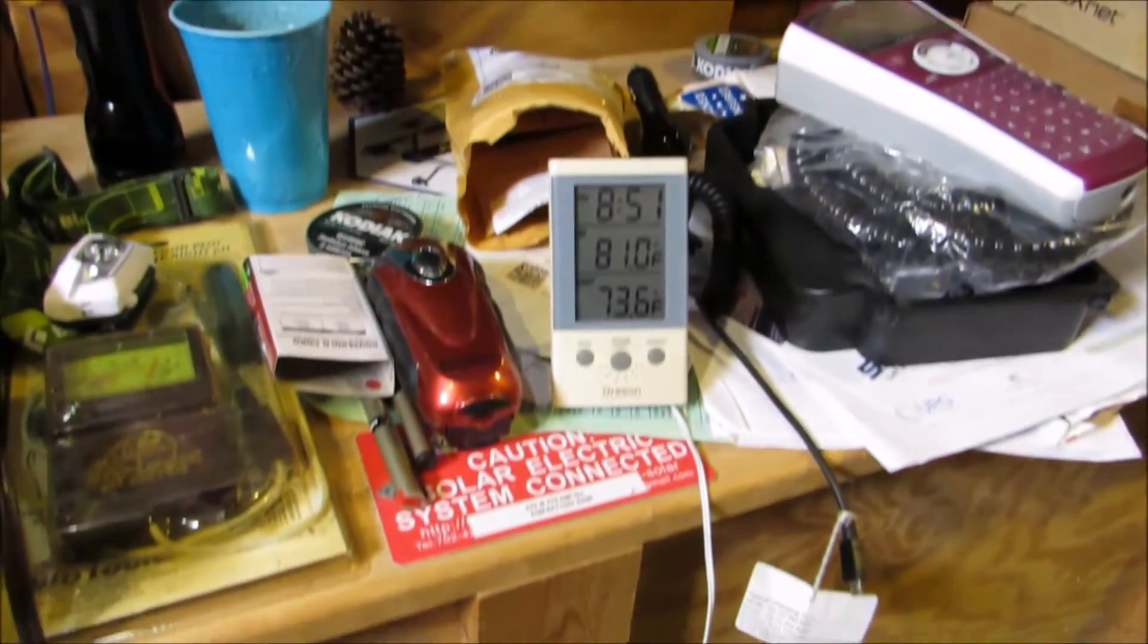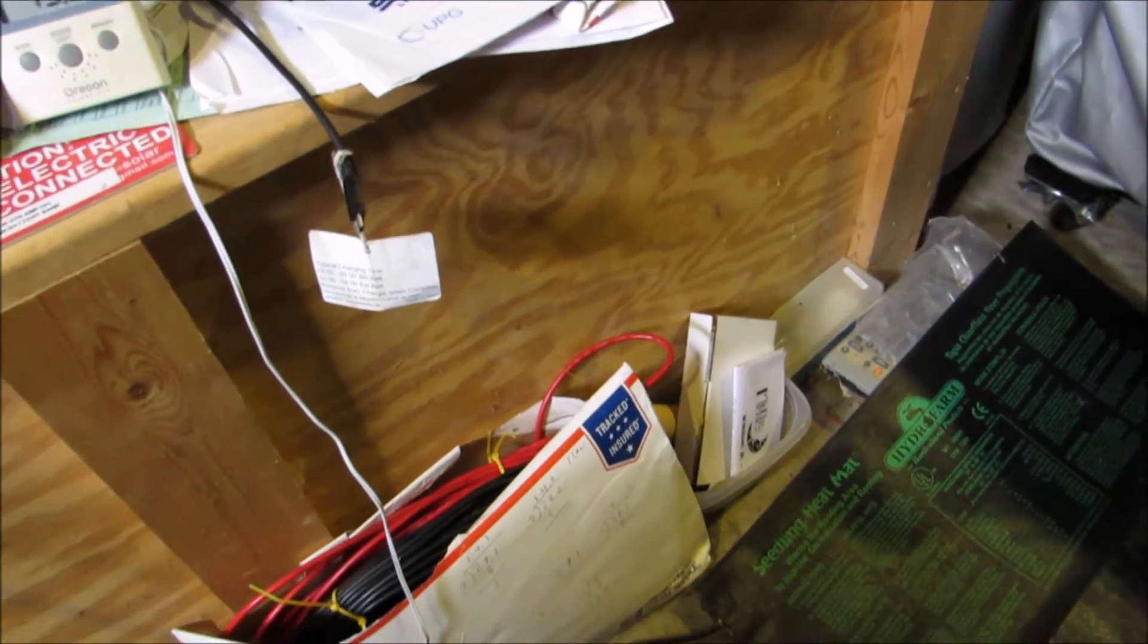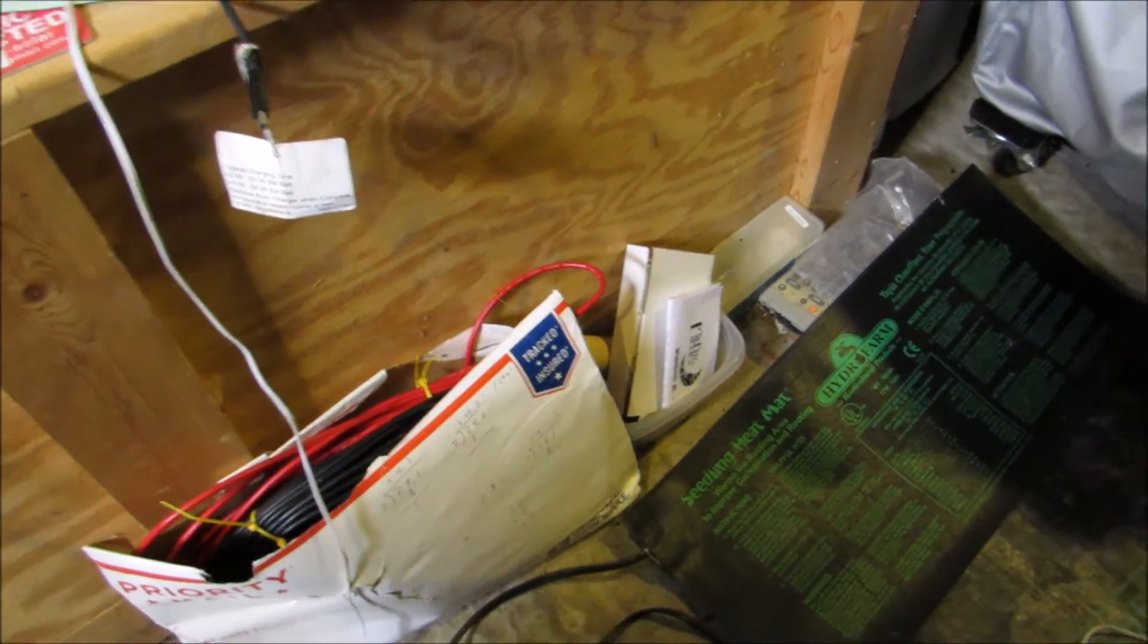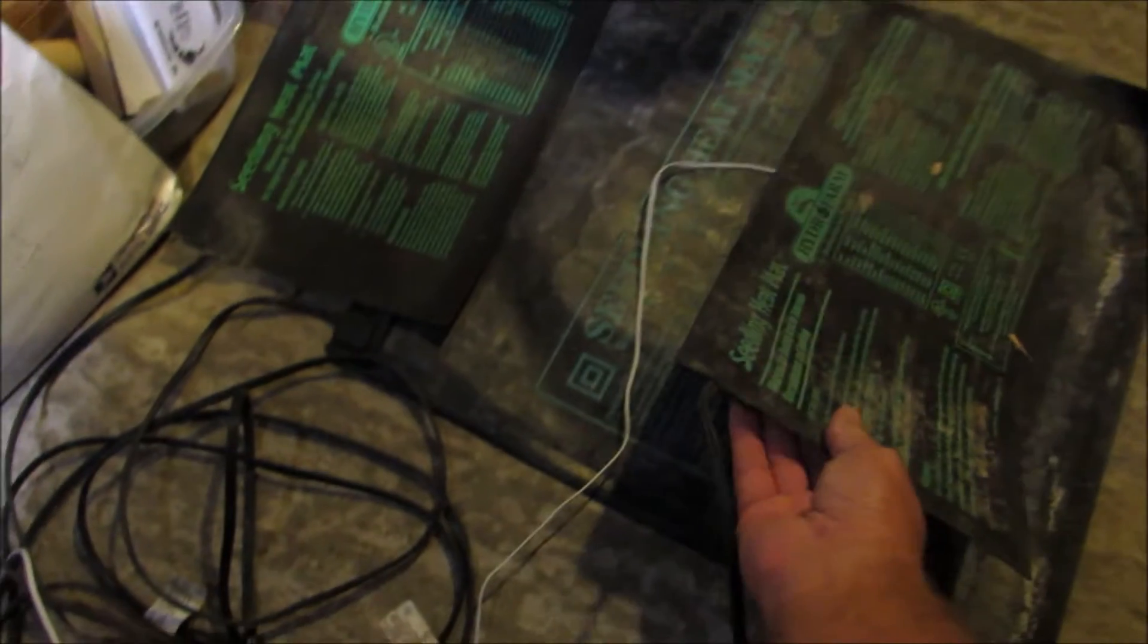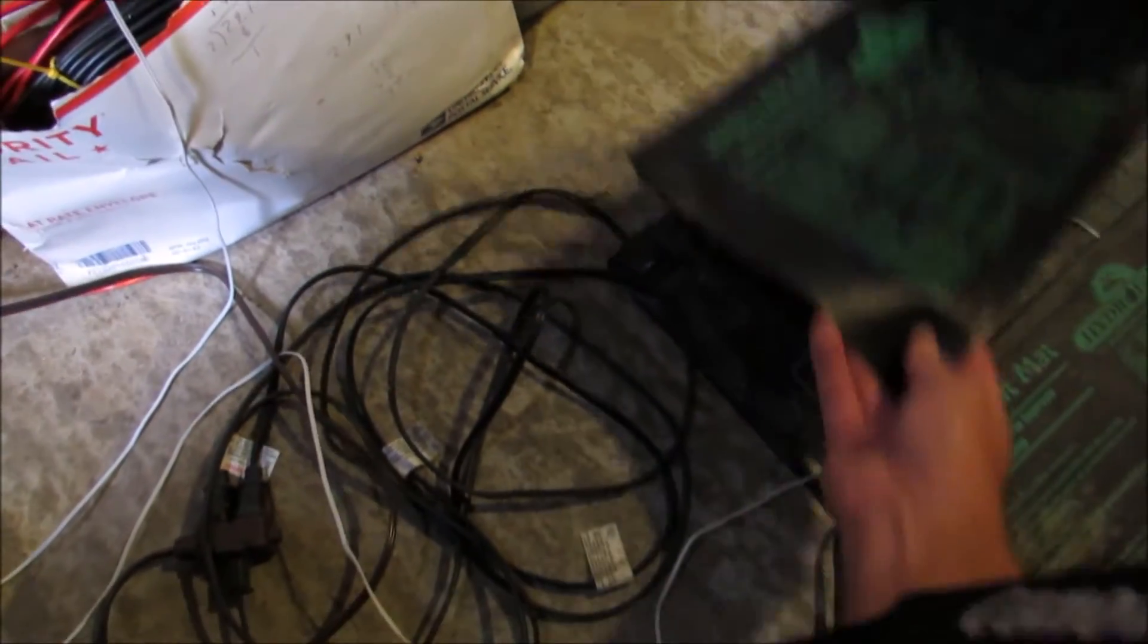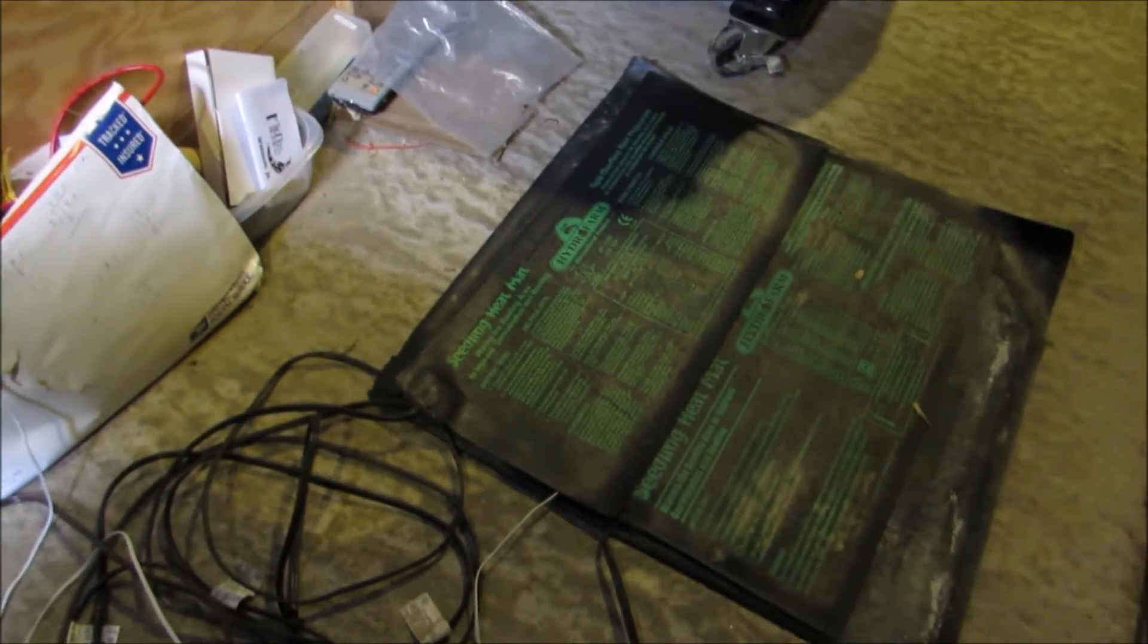We're at 73.6 degrees. I'm gonna take this sensor and put it on my heat mats. I'm gonna put the sensor right there. I got my heat mat here, I'm gonna put these on top of it just so I can get a general idea how warm it gets. That's what I'm putting inside my battery bank.